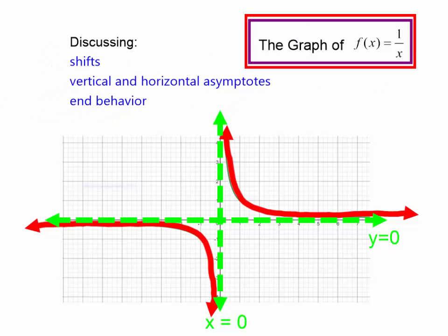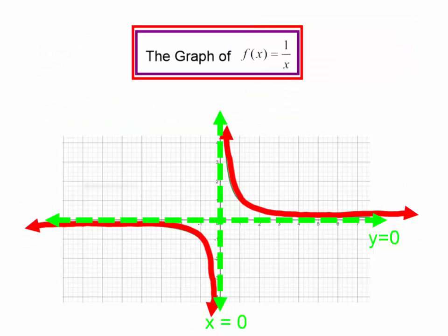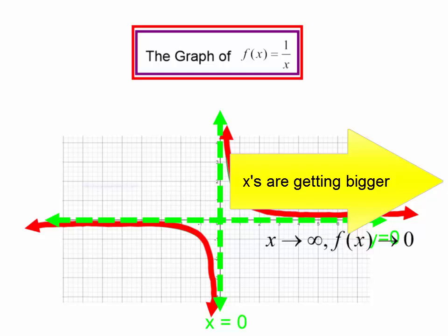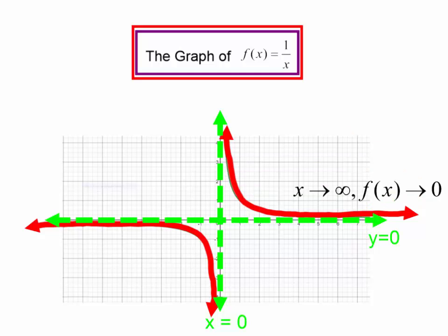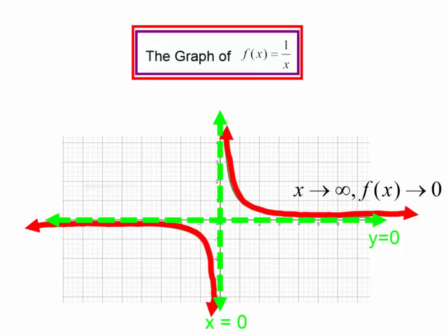In this video I want to discuss how this graph f of x equals 1 over x can shift, how this affects our vertical and horizontal asymptotes, and I want to talk about the end behavior — what is happening at the end of this graph. As my x's get really, really large, going out to the right, as my x's are approaching infinity, what are my y's doing? As my x's are getting bigger and bigger, you see this red function — it's not going up or down, it's just leveling off, getting very close to the line y equals 0, but it never gets there. It is an asymptote.